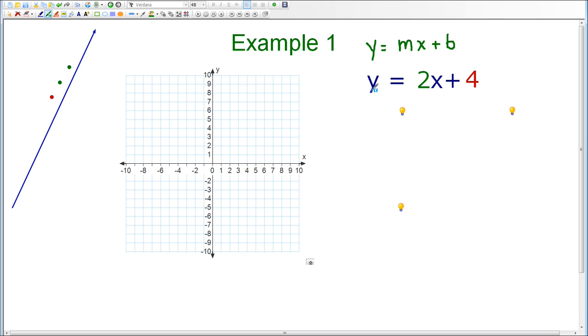In this equation, y equals 2x plus 4, as I said, m is the slope. So in this equation, 2 takes the place of m, so 2 is our slope of the line. The b represents the y-intercept, and in this equation, 4 takes the place of b, so 4 is the y-intercept.